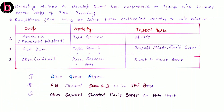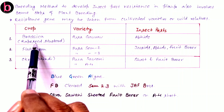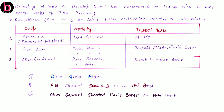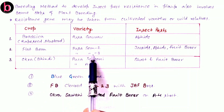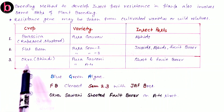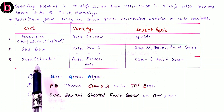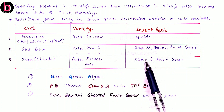Here are three crop varieties developed using plant breeding for resistance to specific insects. First, Brassica (also known as rapeseed or mustard) — its variety Pusa Gaurav carries resistance against aphids. Second, flat bean — its varieties Pusa Sem 2 and Pusa Sem 3 carry resistance against jassids, aphids, and fruit borer. Third, okra or bhindi (Abelmoschus esculentus) — its varieties Pusa Sawani and Pusa A4 carry resistance against shoot and fruit borer insects.